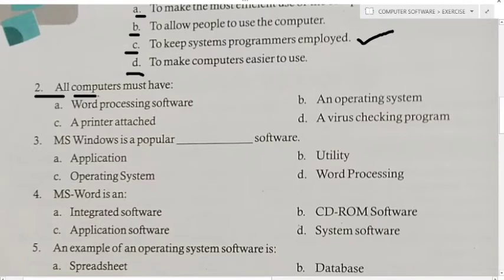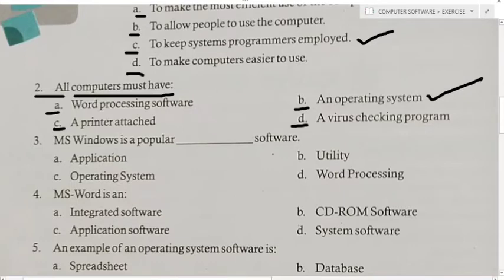Second MCQ: All computers must have — A) Word processing software, B) An operating system, C) A printer attached, or D) A virus checking program. Answer is B — an operating system. Without an operating system, a computer cannot run.